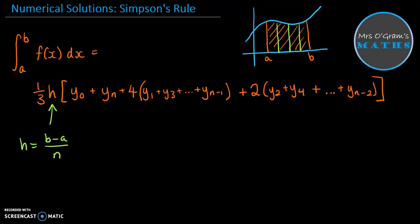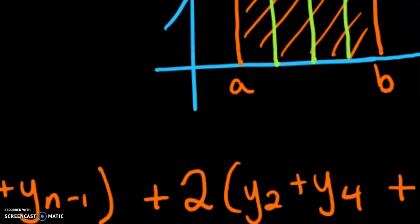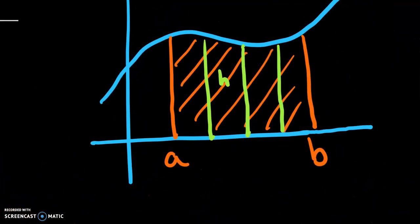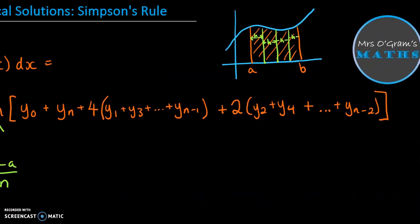So N is the number of strips that you've made. And then H is B minus A divided by N. So it's this distance, take away this distance here. So we get the distance between A and B, divide it by N, and that will give you the width of each of your strips. So this is H. Each of those strips is H wide. And in this case, N is 4 because we've got four of those strips.